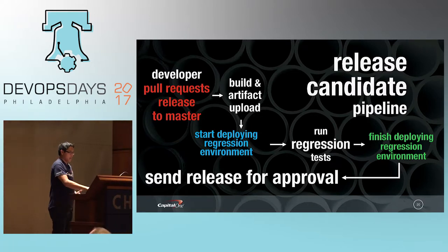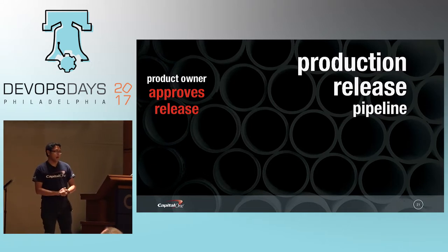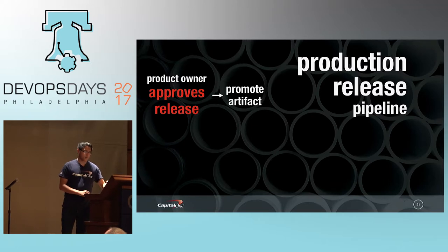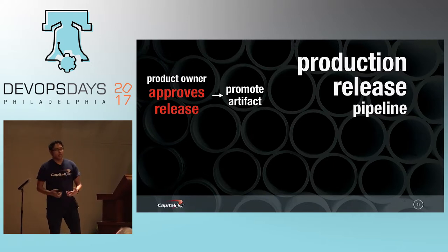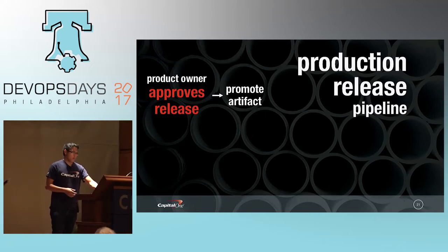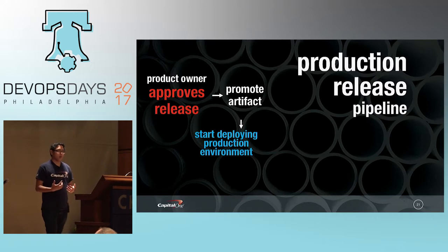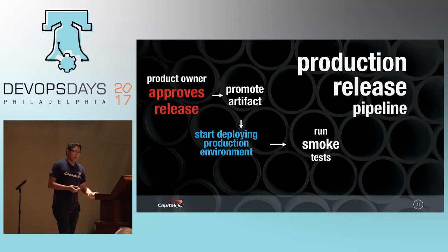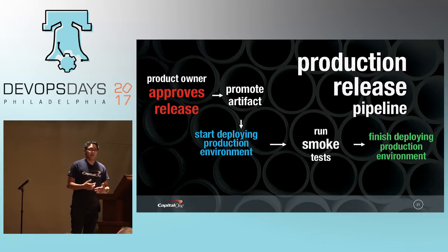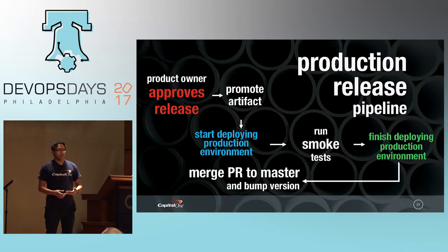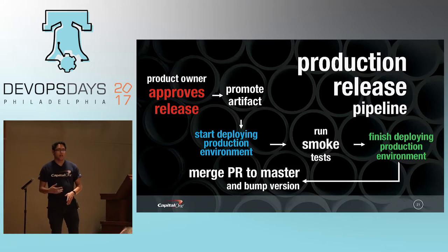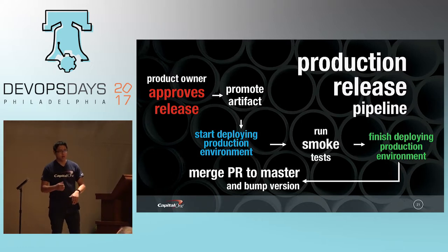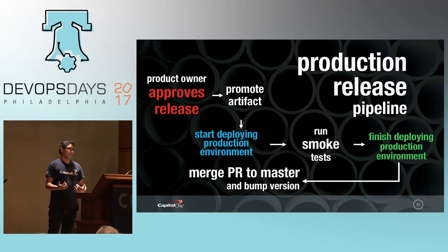All the product owner has to do is hit approve in an email and the production release pipeline kicks off. For the production release pipeline, we don't rebuild the artifact — we promote it inside our repositories, whether it's the Docker registry, S3, or Artifactory. Then we start a blue-green deploy of the production environment, run smoke tests, finish deploying, and the pull request from the release branch to master automatically gets merged. We also bump the version and notify the release management system that the release is complete.